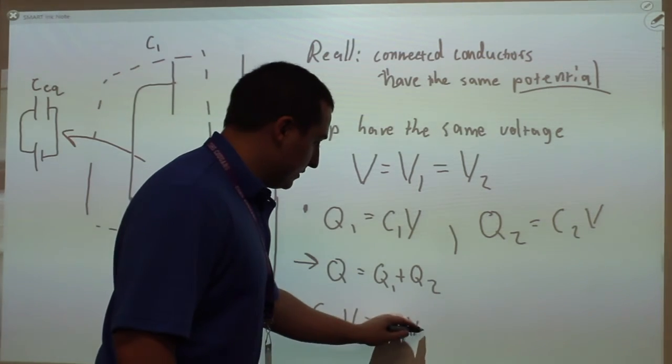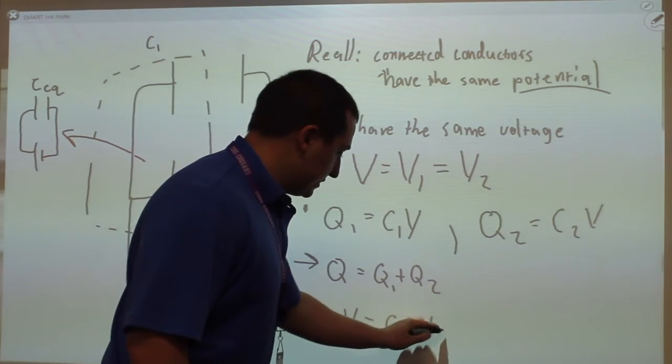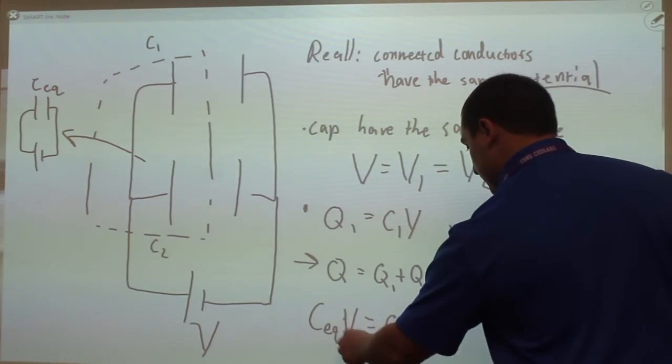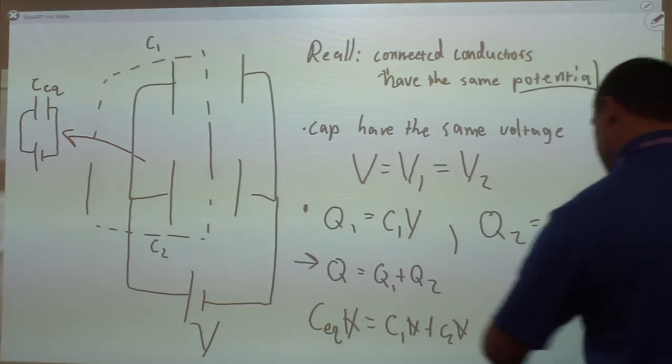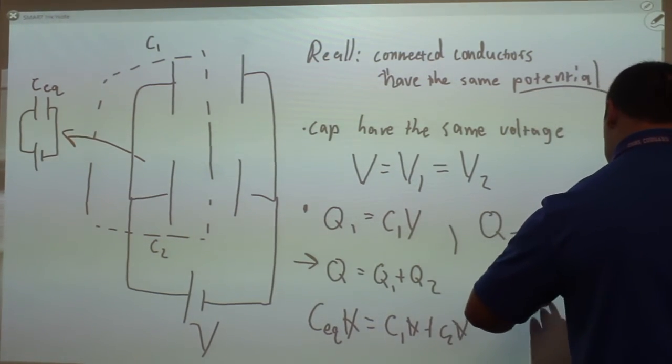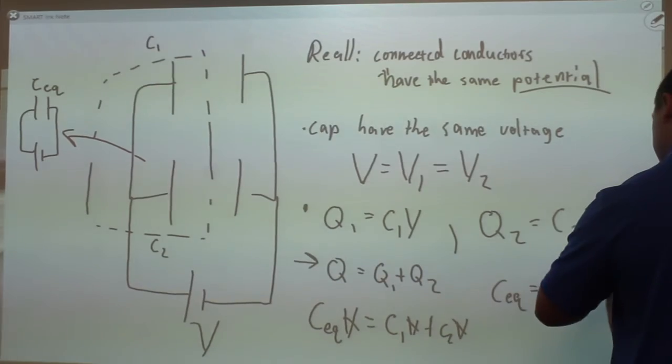Q1 is C1V, and Q2 is C2V. And so if I eliminate the voltage, CEQ is the sum of the individual capacitances.